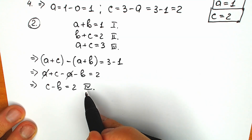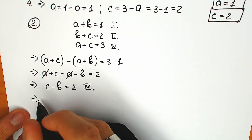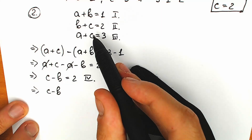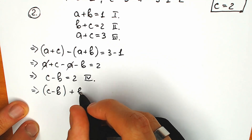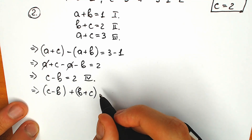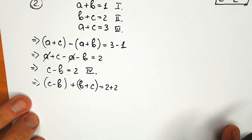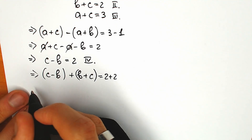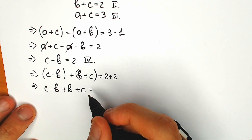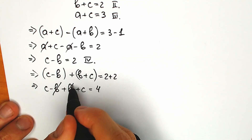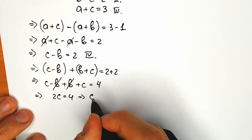Now let's add equation 4 and equation 2. We have c minus b plus b plus c equal to 2 plus 2. Simplifying: the b's cancel, and we get 2c equal to 4, so c is equal to 2.